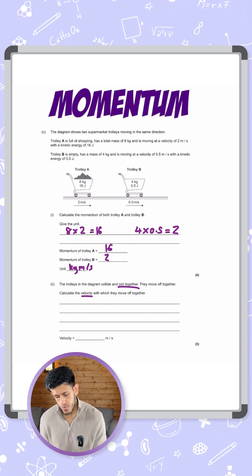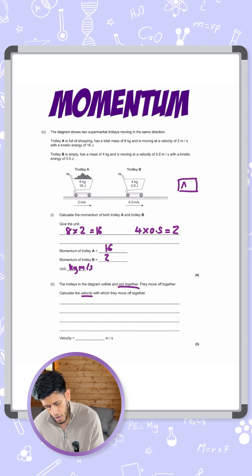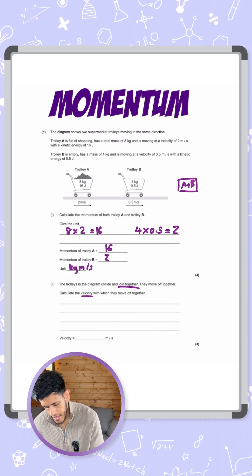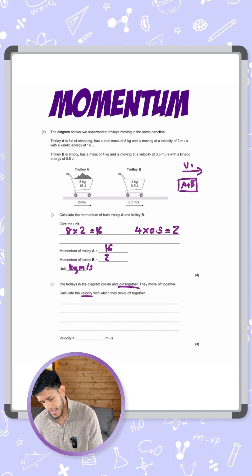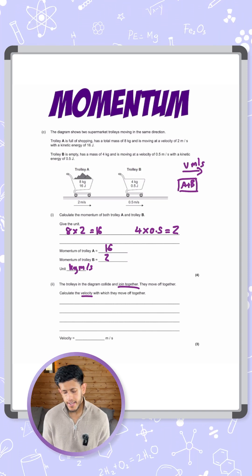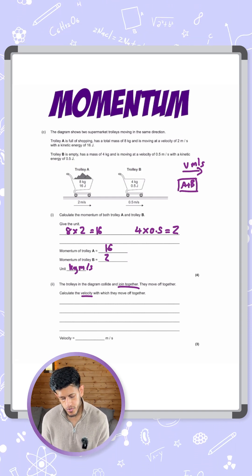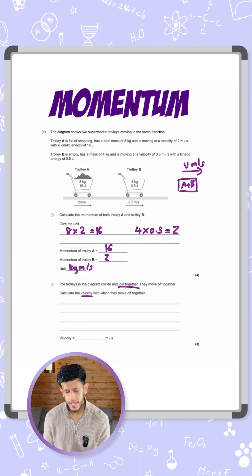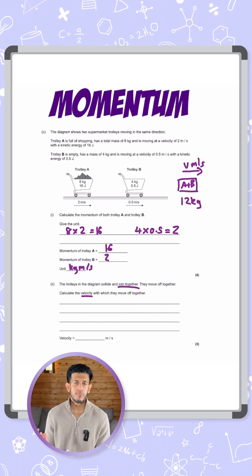I'm going to draw a block representing A and B. They're moving together and we need to find that velocity. I'm going to put V meters per second. As it's both of them combined, we need to combine their mass - 8 kilograms for trolley A, 4 kilograms for trolley B, 8 plus 4 that's 12 kilograms. We know the mass and we've put the velocity V.